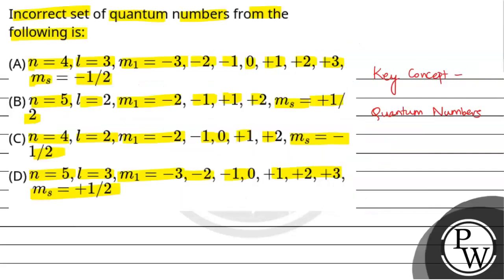Coming back to the question: first option, n=4, l=3 (which is n-1=3), ml ranges from -3 to +3, ms=-½ — this is correct. Second option, n=5, l=2, ml should range from -2 to +2 but 0 is missing — so this is absolutely wrong. Third option, n=4, l=2, ml=-2 is valid, ms=-½ is valid — this is right. Fourth option, n=5, l=3, ml ranges -3 to +3 with 0 included, ms=+½ — this is also right. So the final answer is option B.